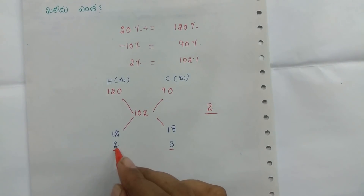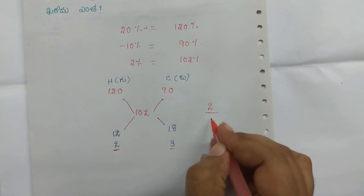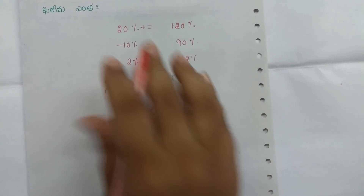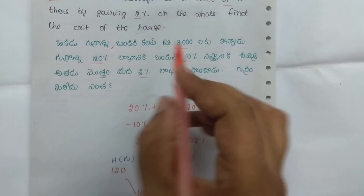Total ratio is 2 plus 3 equals 5. Total is 2.